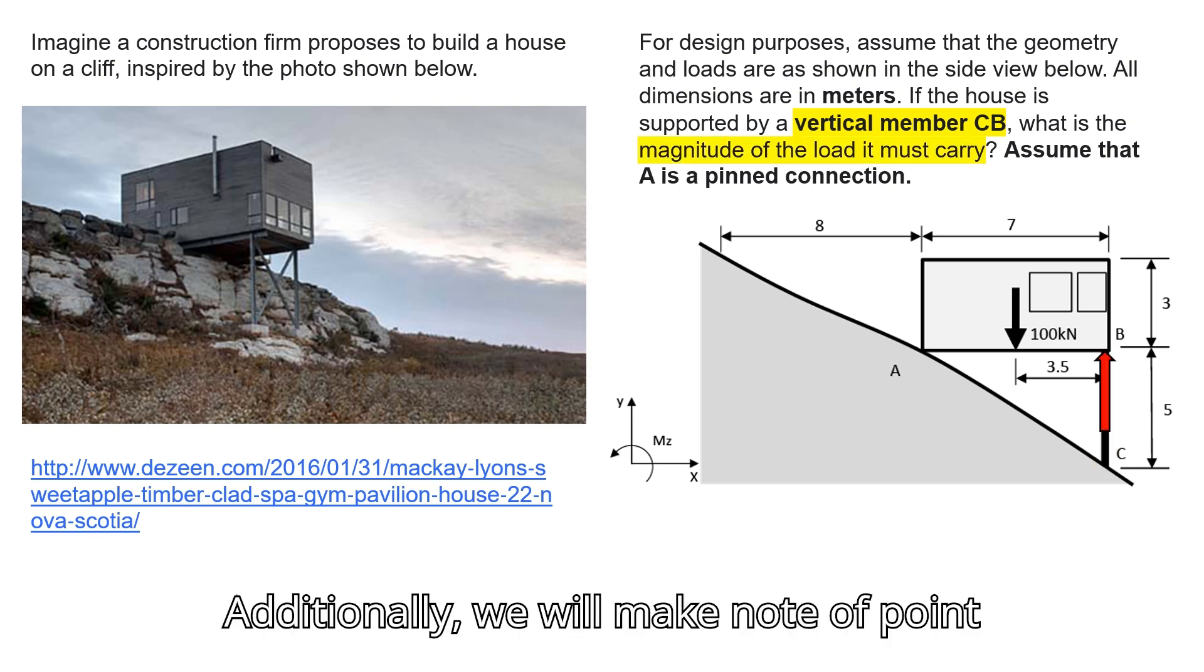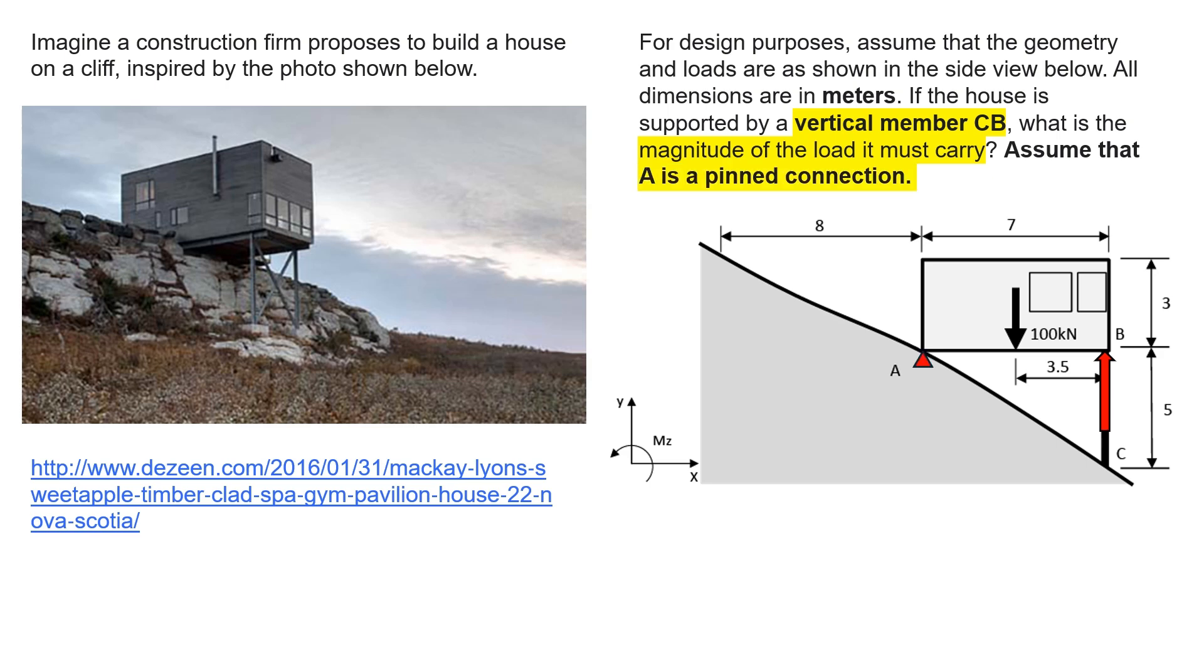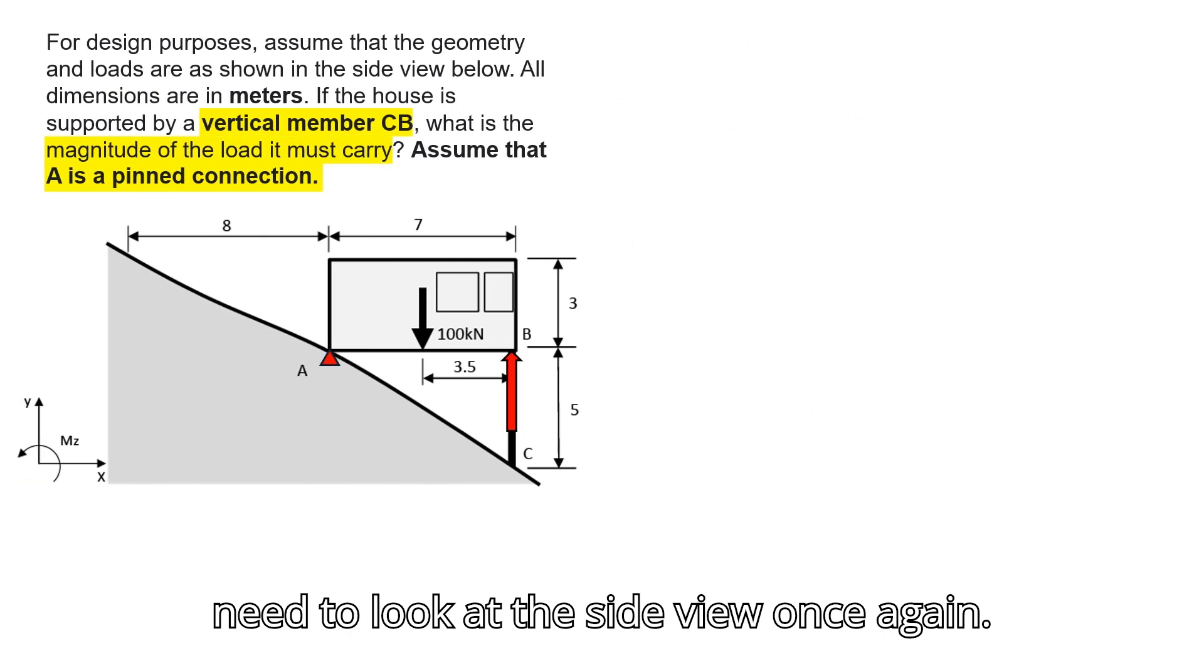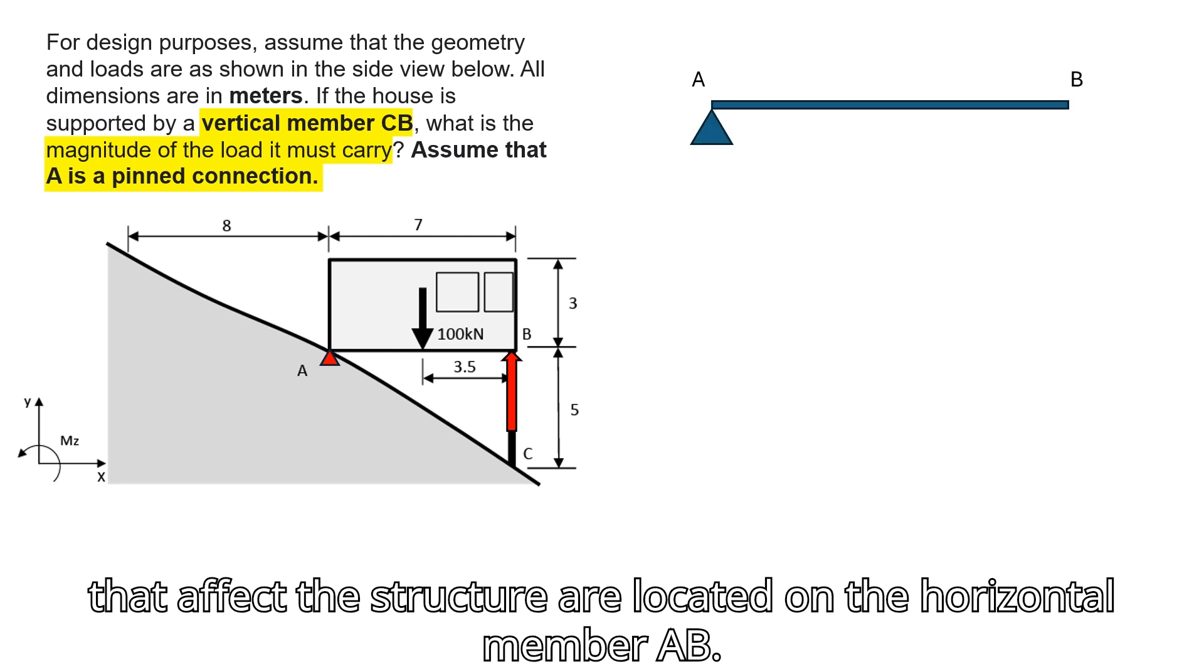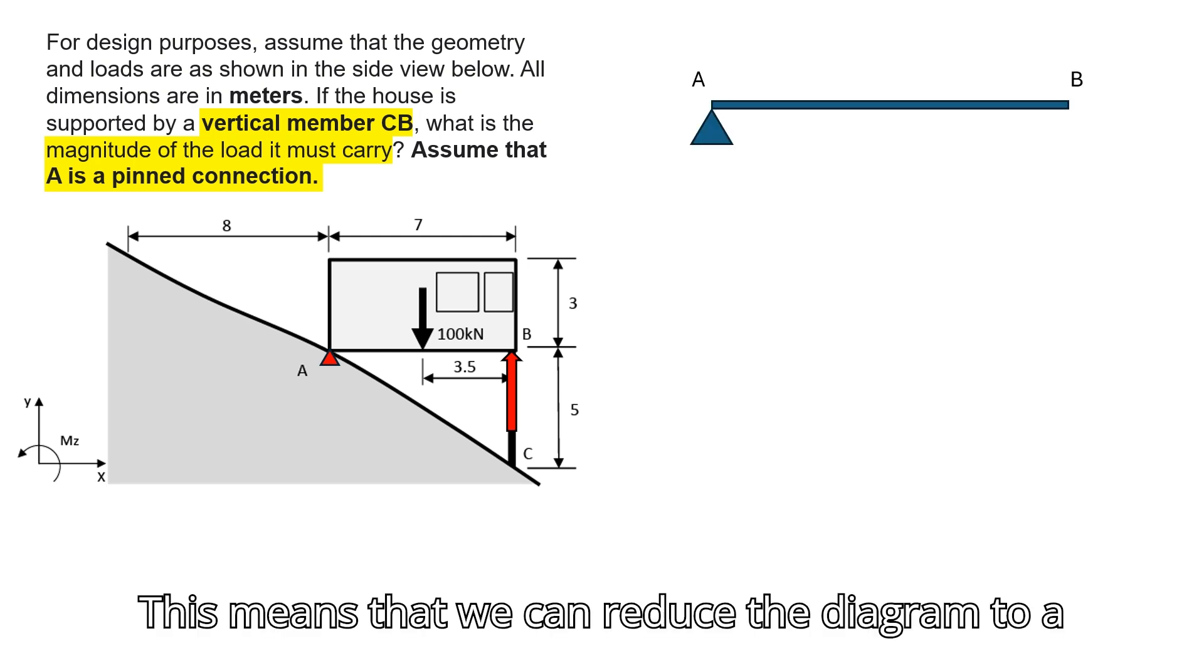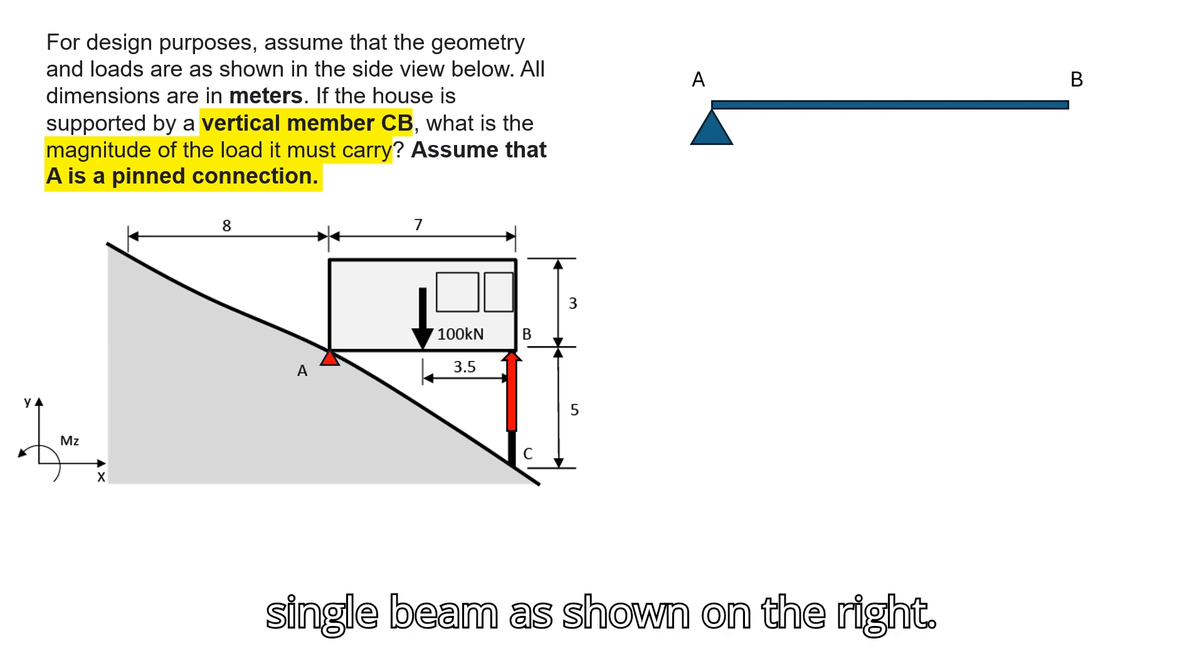Additionally, we will make note of point A and mark it as a pin connection. To create a free body diagram, we will need to look at the side view once again. We can see that all joints and forces that affect the structure are located on the horizontal member AB. This means that we can reduce the diagram to a single beam as shown on the right.